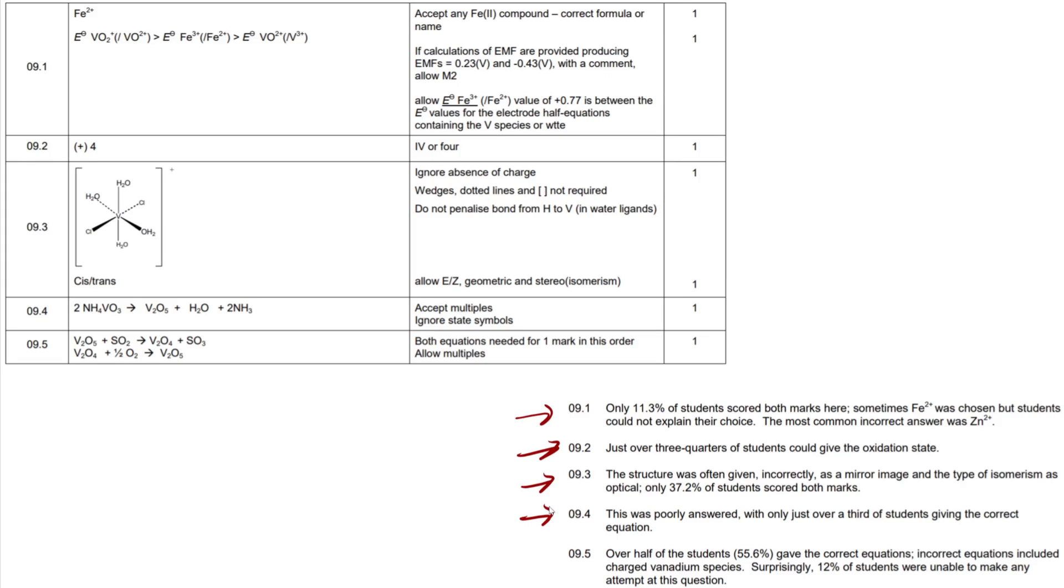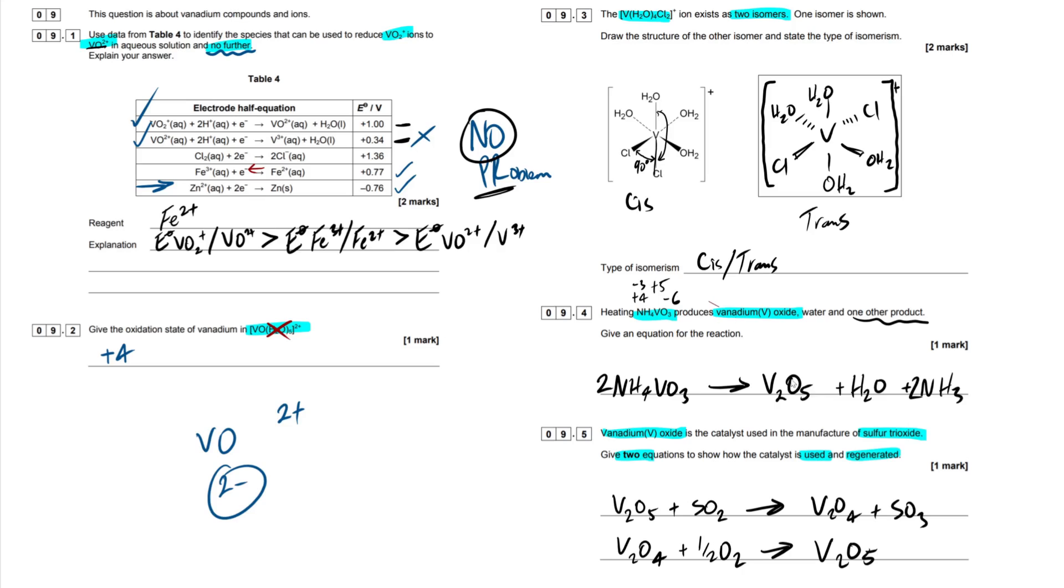Okay, 9.4 then. This was poorly answered with only just over a third of students giving the correct equation. Now, it's only a one marker question. I wouldn't even worry about this. If you're stuck on this and you're like, I don't know what to balance, I don't know what's going on, what's the other product? Just skip it. Honestly, just skip it. It's a one marker. It's not the end of the world. You can always come back to it and give it a go at the end of the paper if you've got some spare time. We knew that one of them had to be water. We knew one of them was the vanadium 5 oxidation state compound. So as long as you remember this is the form of the plus 5 oxidation state vanadium compound, you should have been able to get this guy right here, the ammonium based on this ammonium right here. But if not, not the end of the world as I said.